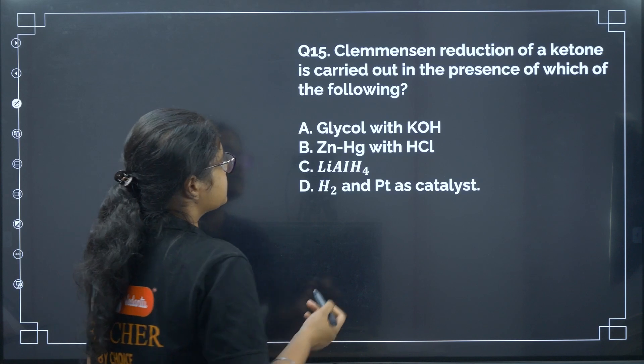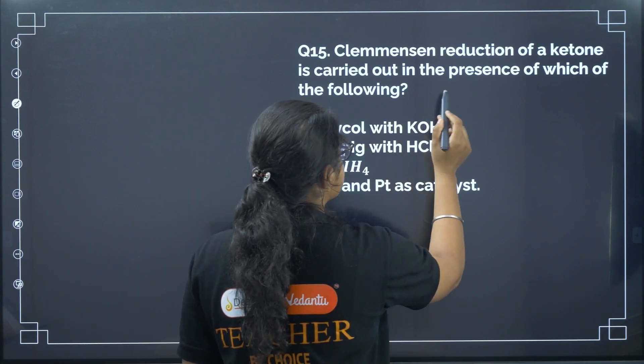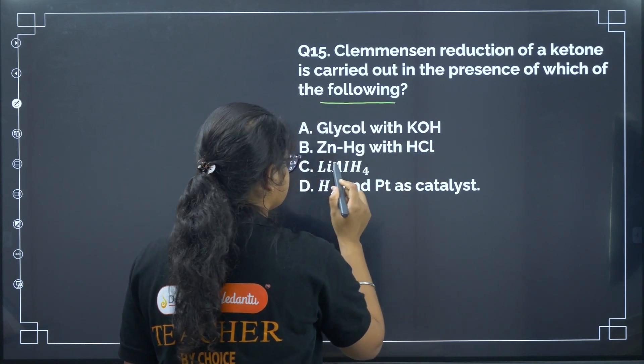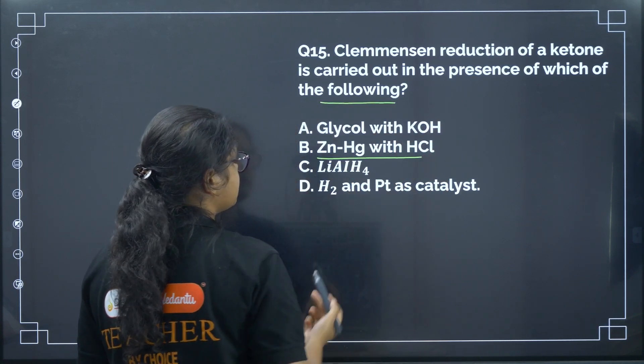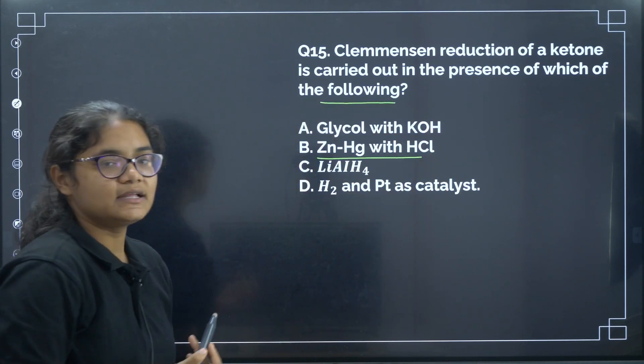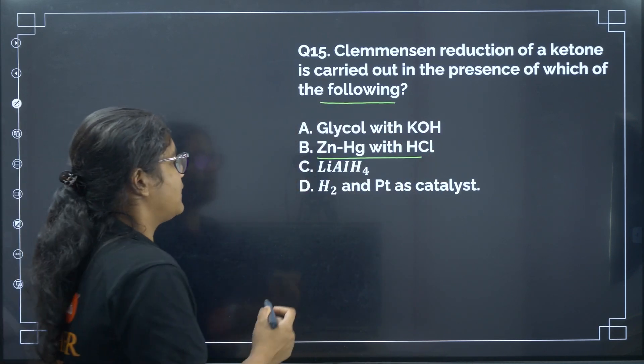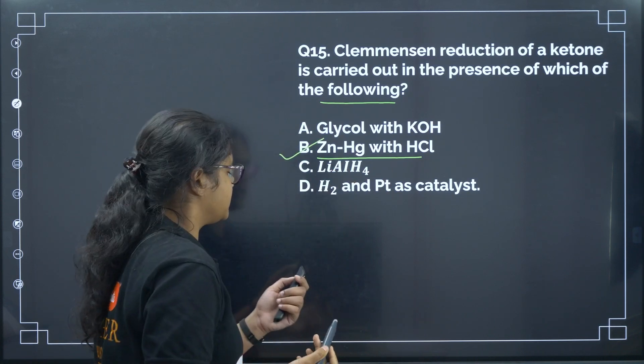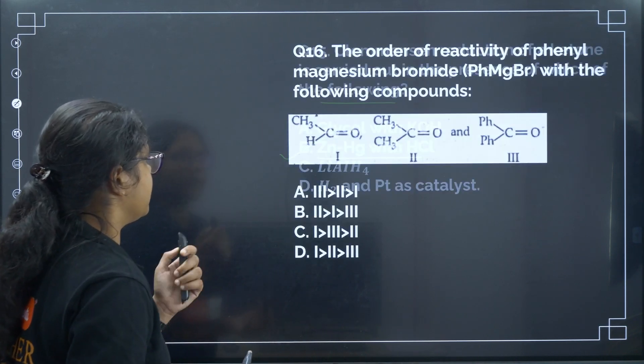Next: Clemmensen reduction of a ketone is carried out in the presence of which reagent? The reagent for Clemmensen reduction is zinc amalgam (Zn-Hg) with hydrochloric acid (HCl). Correct answer: option B.